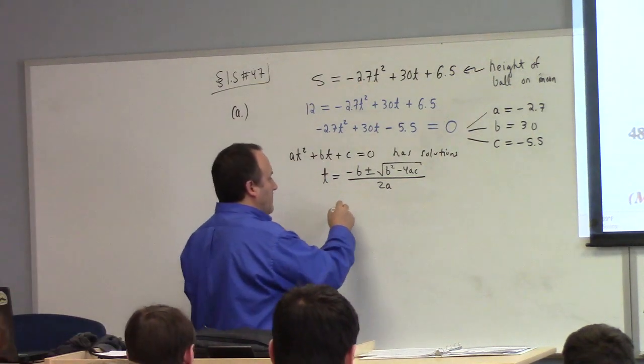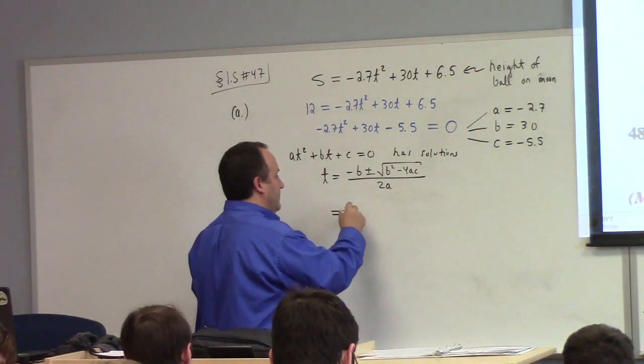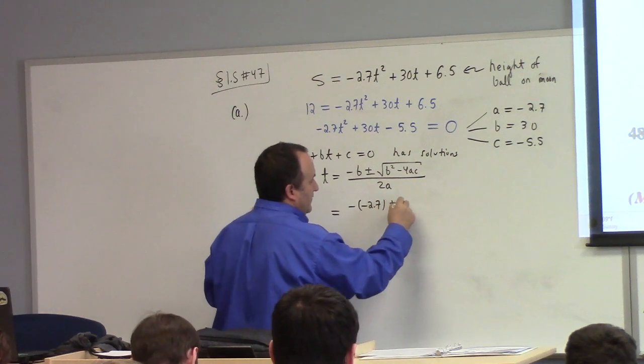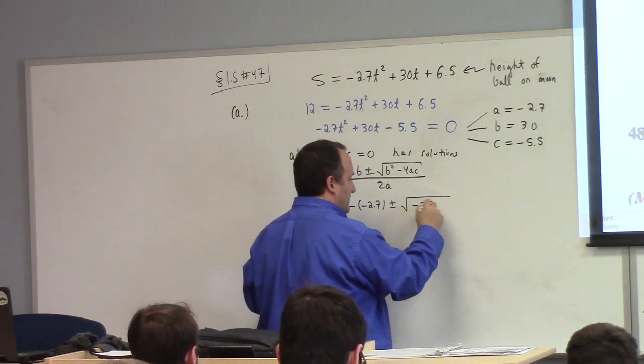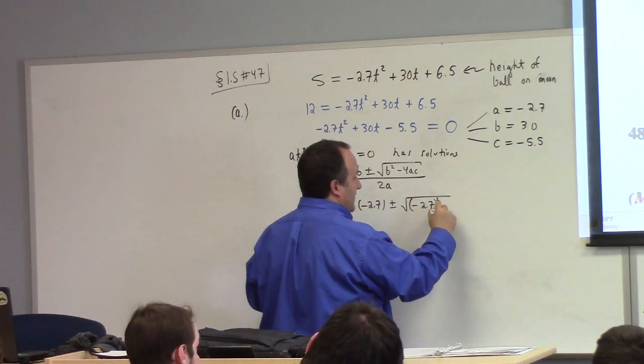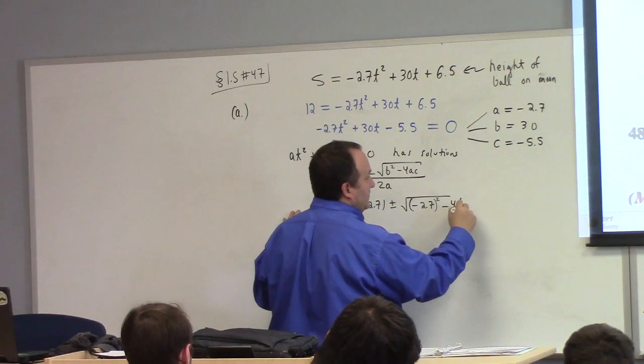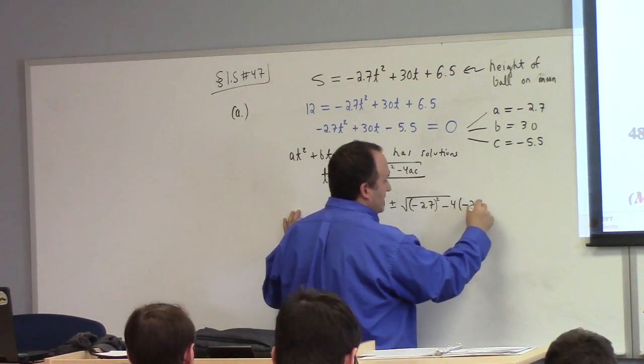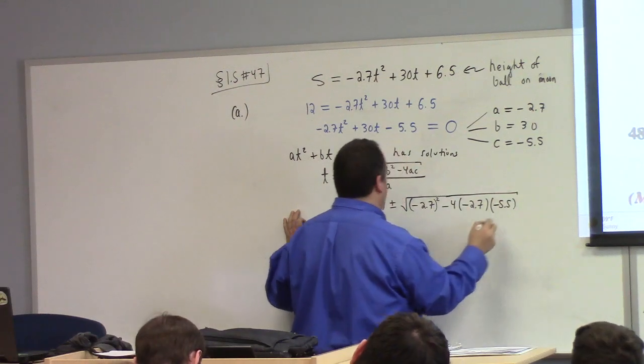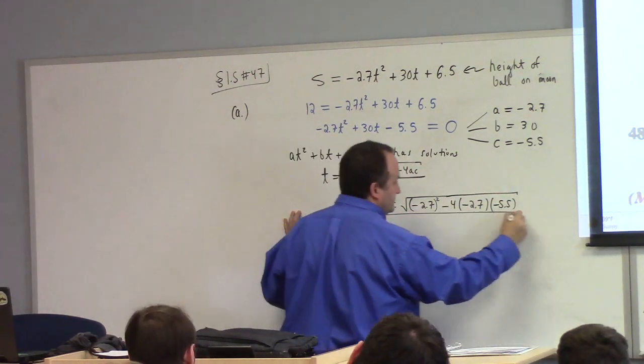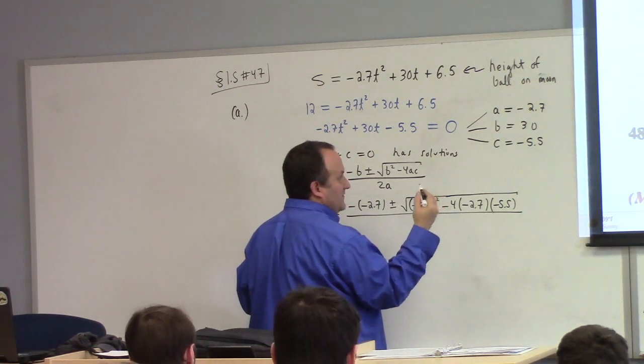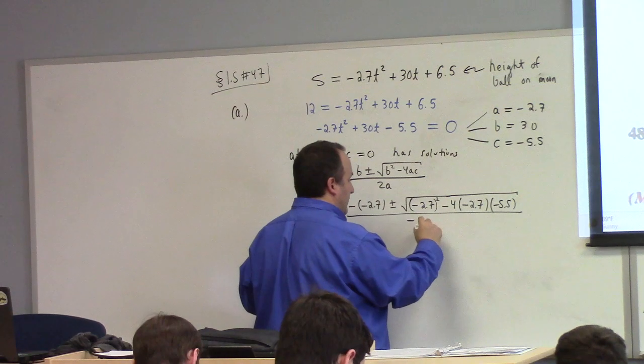So, let's put it into practice. In this problem, we're up against minus parentheses minus 2.7 plus or minus the square root of minus 2.7 quantity squared. And then we've got minus 4 times minus 2.7 times minus 5.5. Mind the minuses. They do matter. And then divided by 2A, which is 2 times 2.7, 5.4, so minus 5.4.